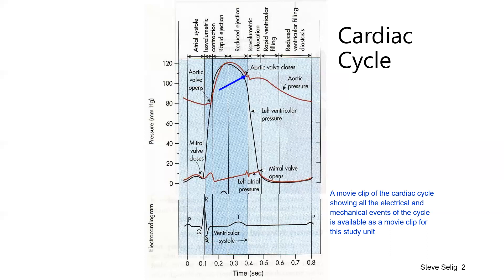At the point where left ventricular pressure drops below aortic pressure, the aortic valve snaps shut. Shortly after, there is a precipitous drop in left ventricular pressure as it is now fully relaxed and has been largely emptied of blood — though not completely, as there is some residual volume of blood left in the left ventricle at the end of systole.